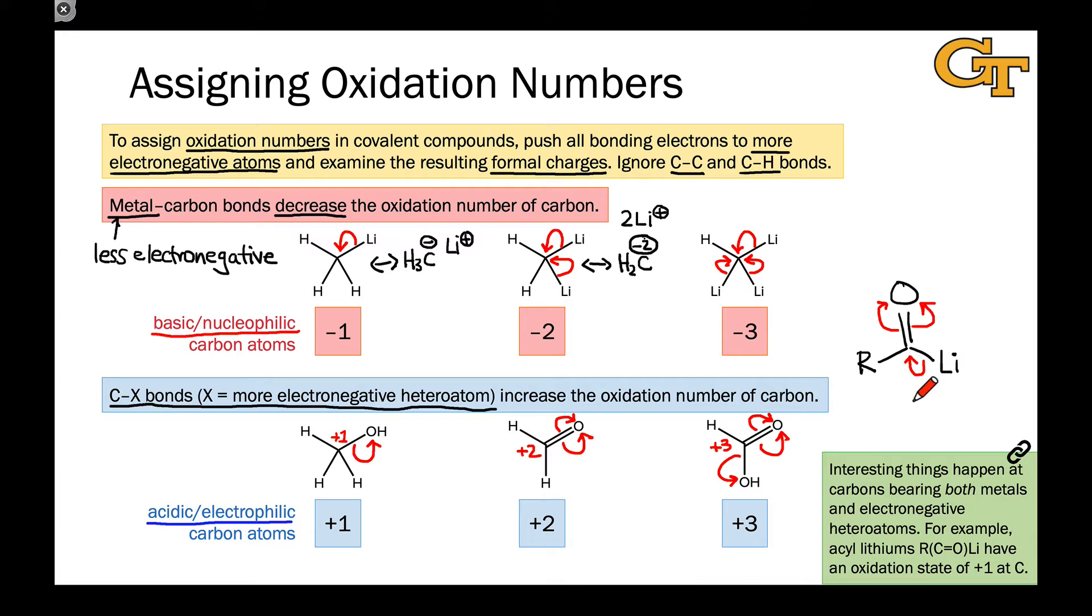And if you do all the electron-pushing, you end up with an oxidation number of plus one at the carbonyl carbon, which is rather strange if you're used to thinking about carbonyls, ketones, and aldehydes being at the plus two oxidation state.